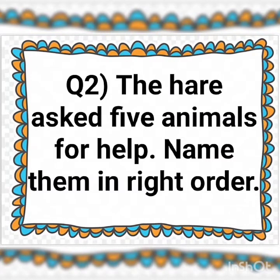Now our next question is: the hare asked five animals for help — name them in the right order. What you have to do is write all the names in the right order.